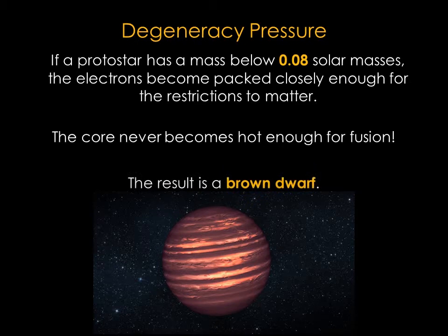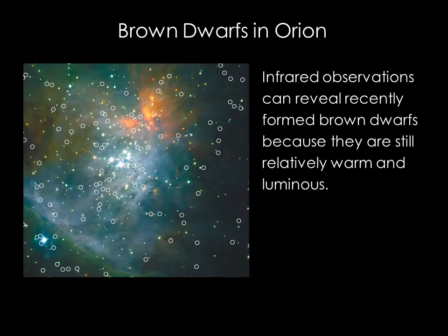The result is a failed star known as a brown dwarf. Brown dwarfs are faint and difficult to detect. But since they are still relatively warm, looking for them in the infrared allows us to see them.